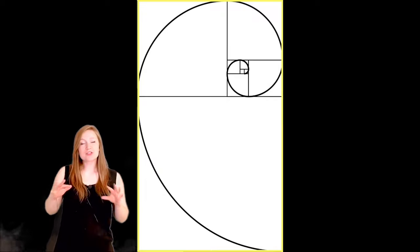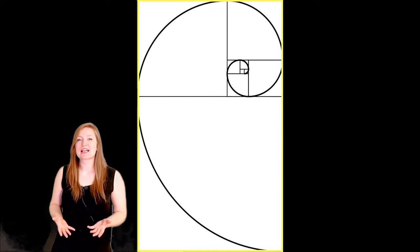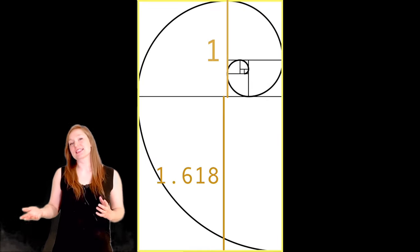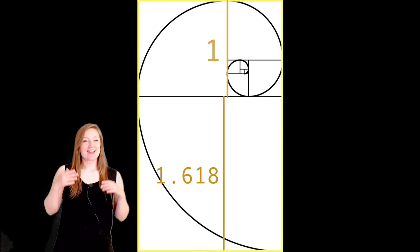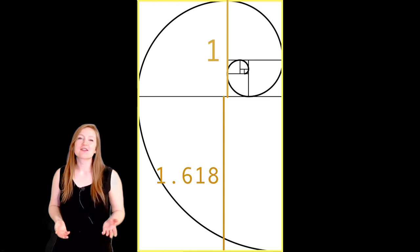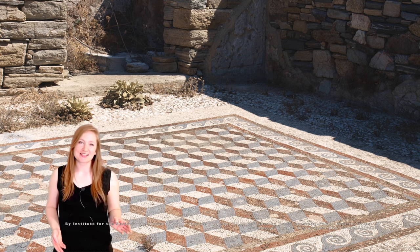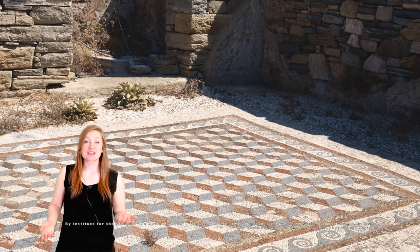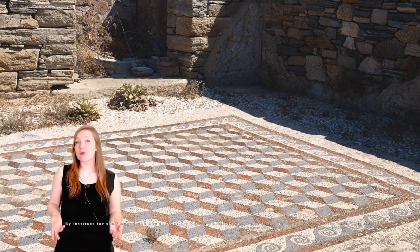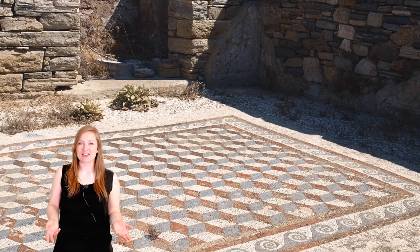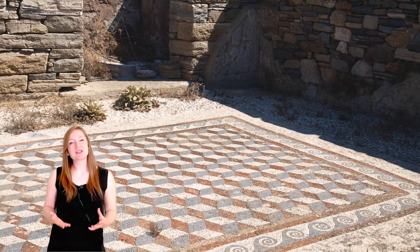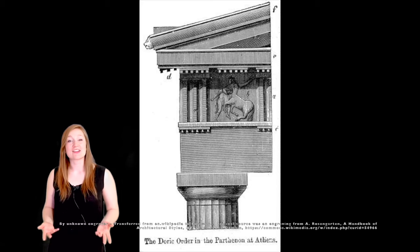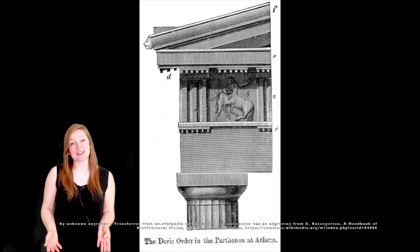The golden ratio in itself is 1 to 1.618. The ancient Greek mathematicians were always fascinated by this ratio because it appeared in so many things in life. Today, the majority think of Fibonacci, also known as Leonardo of Pisa, as the one who gave a sequence of numbers which contribute to the golden ratio.